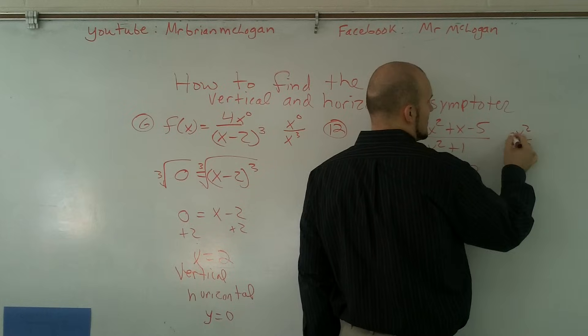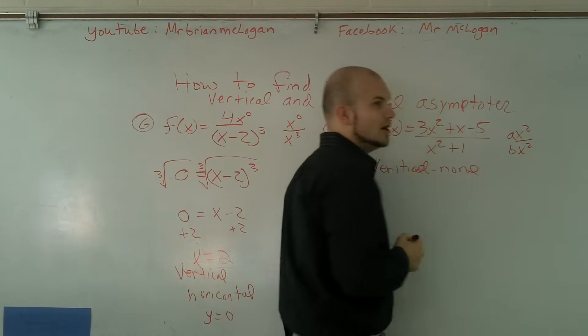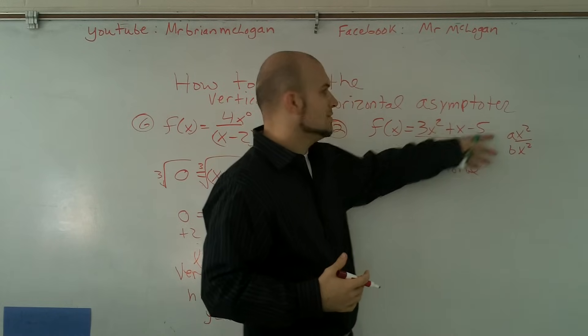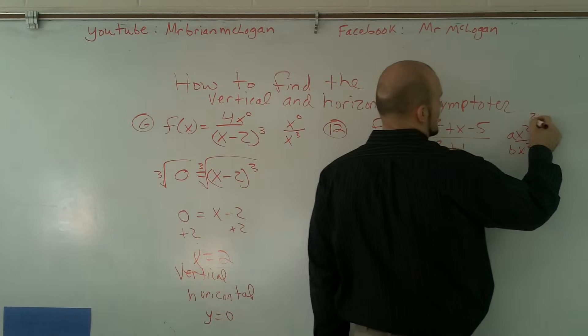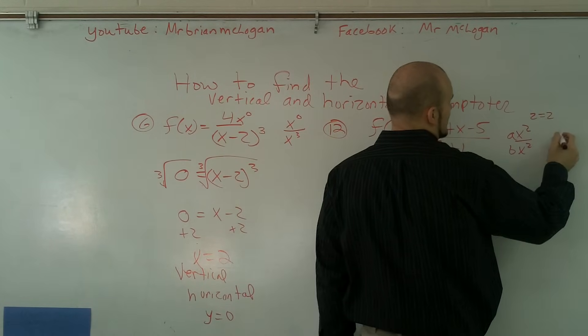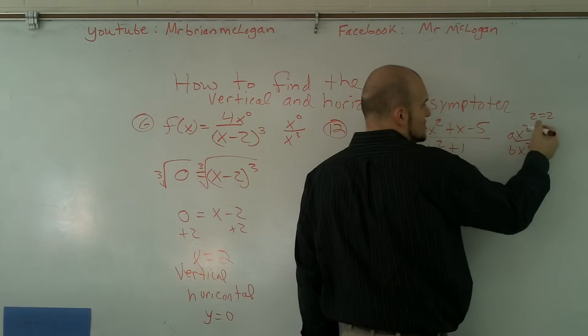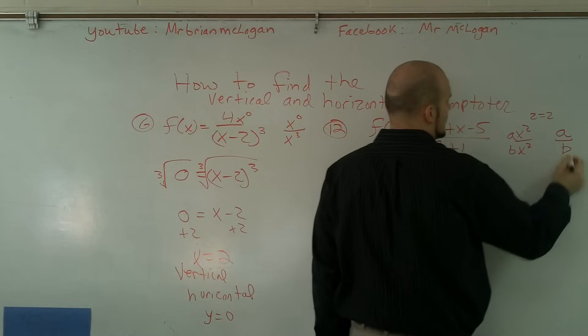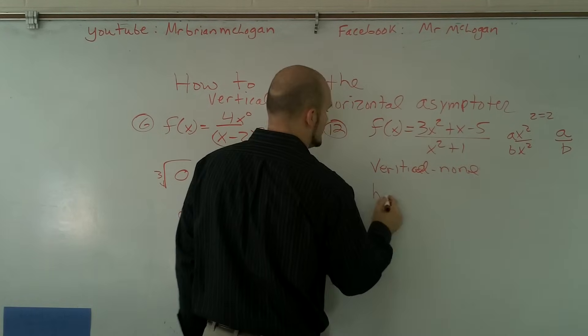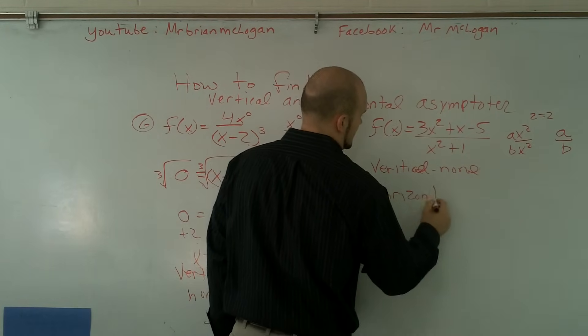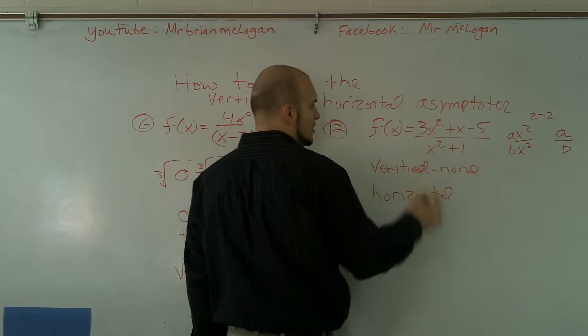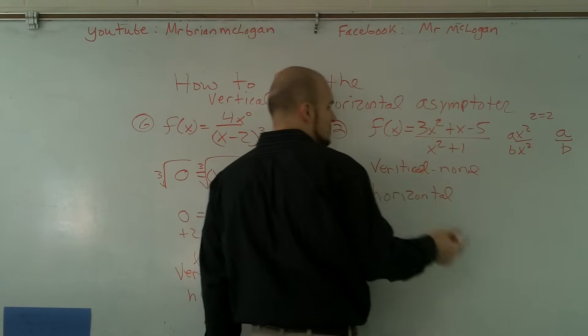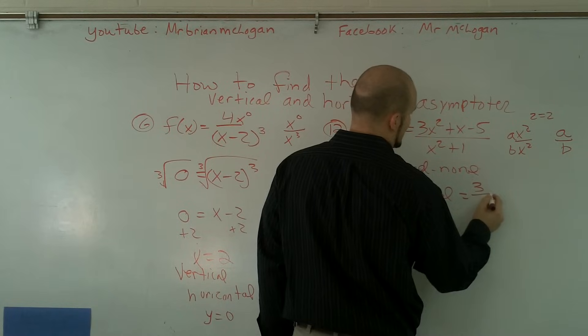then the horizontal asymptote is the ratio of a over b. We have a and b is what we call their coefficients. So the horizontal for this problem is going to be three over one, because the coefficient for this problem is one. So it would be three over one.